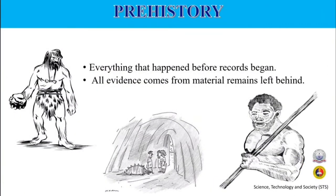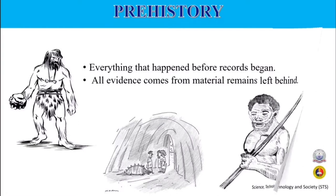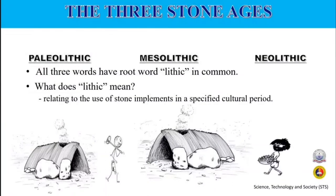Let's begin with prehistory, which means everything that happened before records began. All evidence comes from material remains left behind. In short, prehistory refers to the period of time before civilization and writing. In prehistory, there are three stone ages.